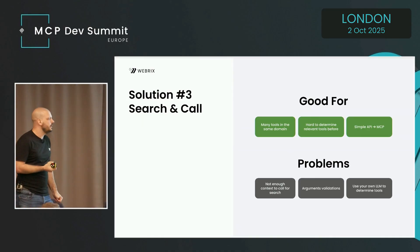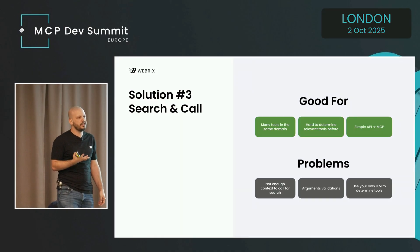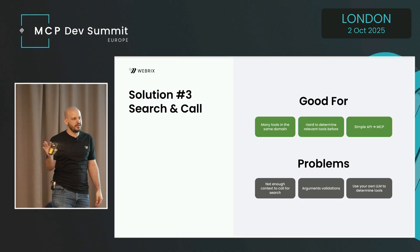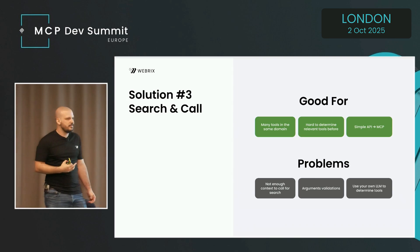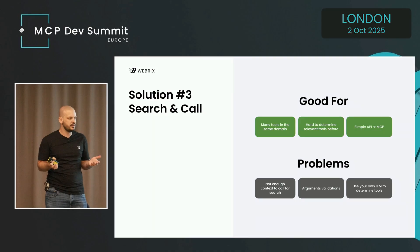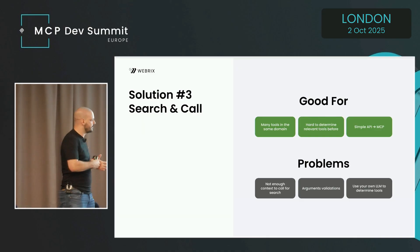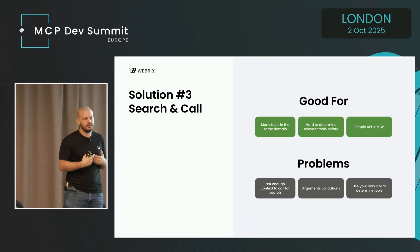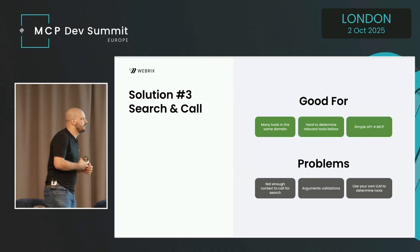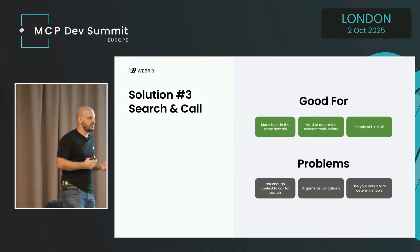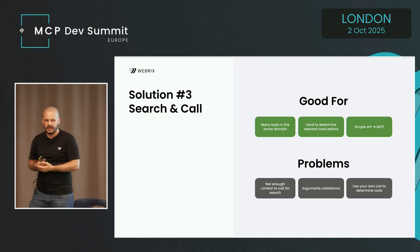The main problem with search and call is there's not enough context for the LLM to know when to call the search tool. Sometimes the LLM calls search constantly just in case, wasting time and tokens. Other times, the LLM doesn't know a tool exists and tries to open a browser or run CLIs instead. Argument validation is also tricky without a strict input schema. Additionally, the server runs its own LLM on the backend, so you can't easily swap it when testing different models.